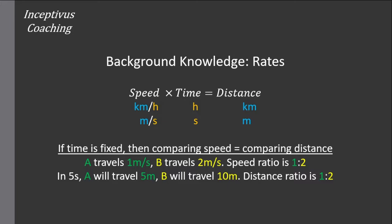So their distance ratio is five to 10, which still boils down to one to two. So you see that the ratio or the proportionality between the two people never changes if they travel the same amount of time.